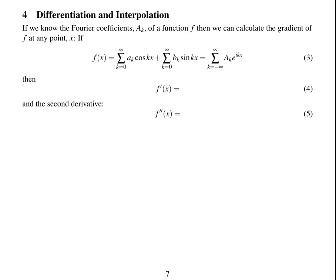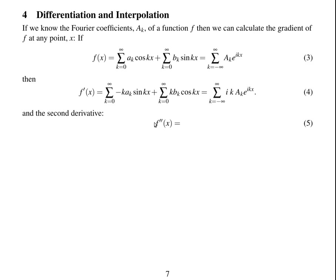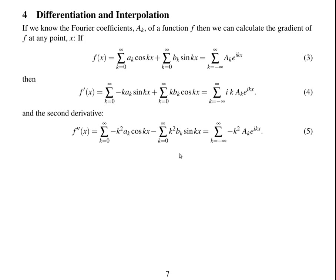You can do differentiation and interpolation using Fourier series, and this is done discretely and is a very accurate method. By differentiating the sines and cosines in the Fourier series, you can work out the gradient of f(x). Differentiating cos gives minus sine with a factor of k; differentiating sin(kx) gives cos(kx); and differentiating the exponential gives ik·a_k·e^(ikx). For the second derivative, you differentiate again, giving i squared, which becomes minus one.